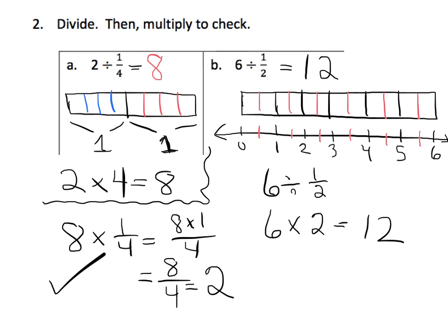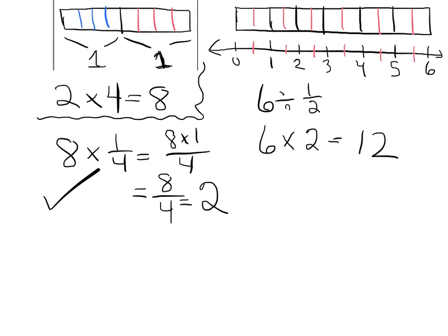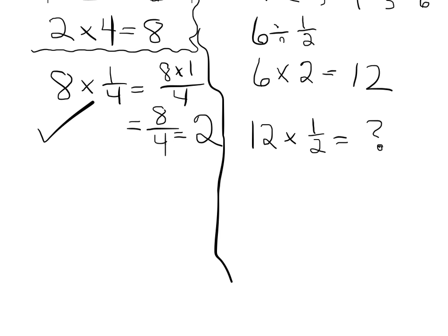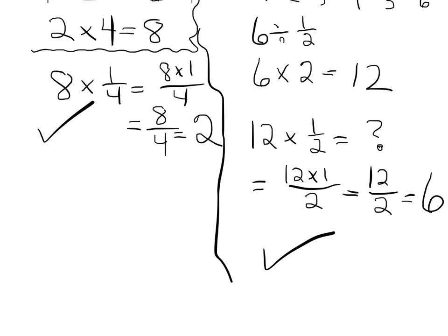How would we check it? We're going to do 12 times 1 half to see if it equals 6. So 12 times 1 half — we know that is 12 times 1 over 2, which is 12 over 2. And 12 halves equals 6. So our answer checks out.